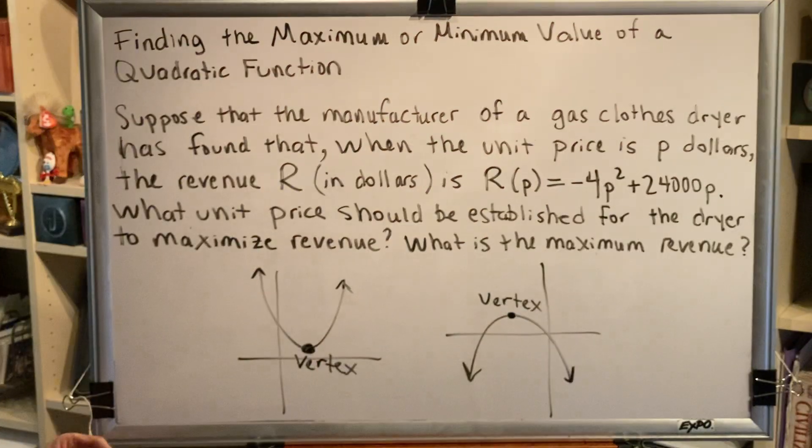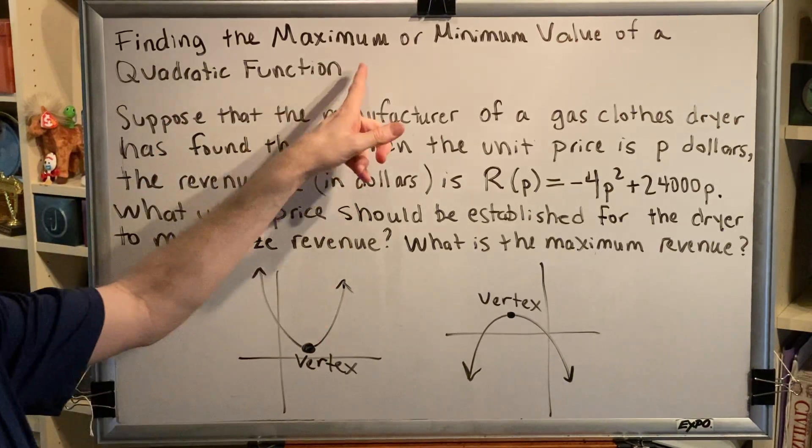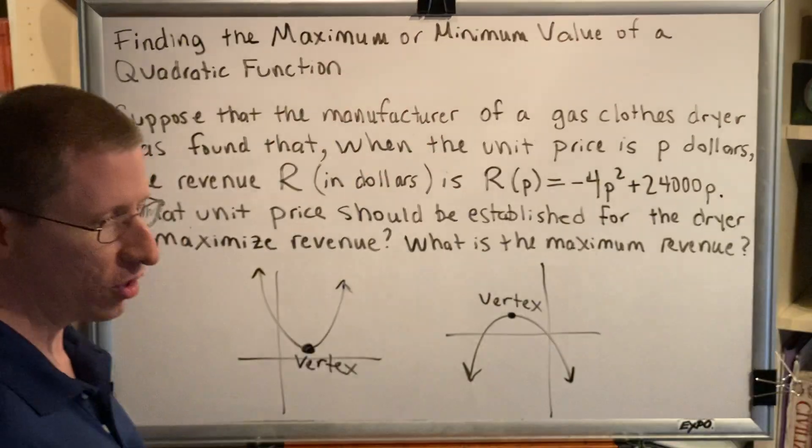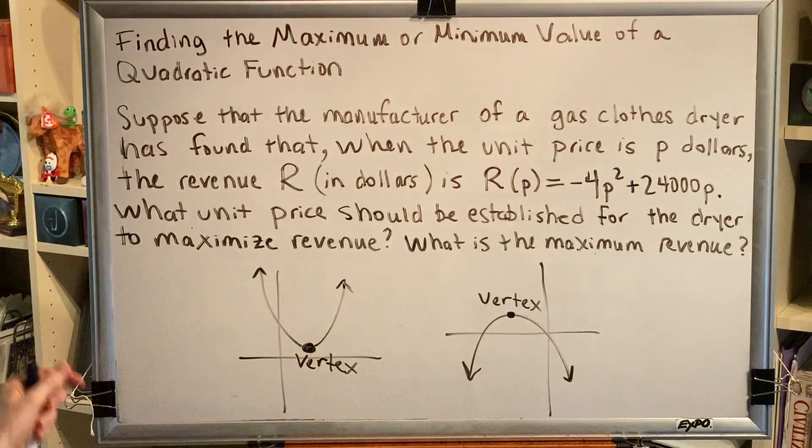So from this we learn that whenever we are dealing with a quadratic function and we see an extreme word like minimum or maximum, greatest or lowest, highest or smallest, we're looking for the vertex.